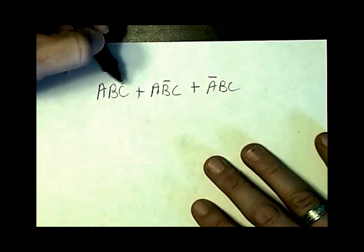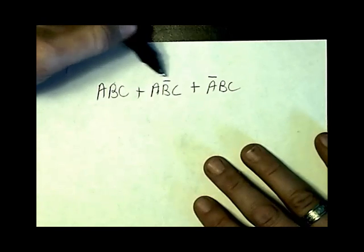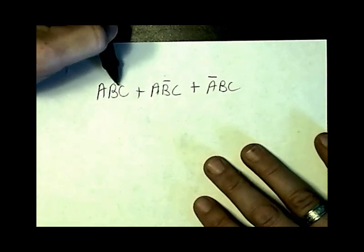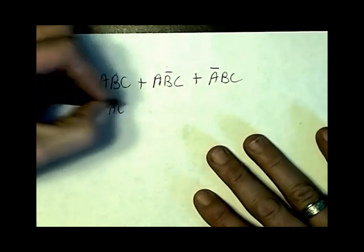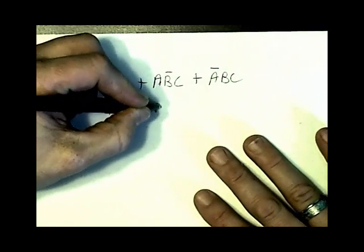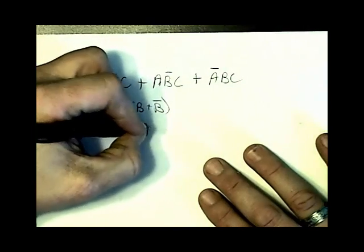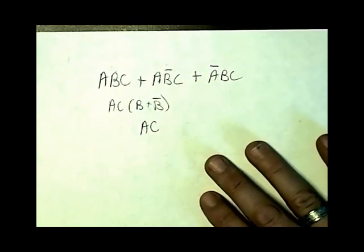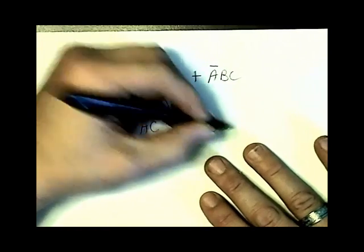First thing I'd like to do is try to combine two things with two things in common. If you look at the first two, they both have an AC in common. So I'm going to go ahead and take out an AC. And I'll be left with B plus not B. B plus not B is one. So that's going to simplify down to AC.